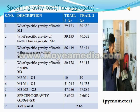Specific Gravity Test for Fine Aggregate: m1 = Weight of specific gravity bottle with water; m2 = Weight of bottle plus fine aggregate; m3 = Weight of bottle plus fine aggregate plus water; m4 = Weight of bottle plus water. g1 = m2 - m1, g2 = m4 - m1, g3 = m3 - m2. Specific Gravity = g1 / (g2 - g3). Average specific gravity obtained: 2.66.